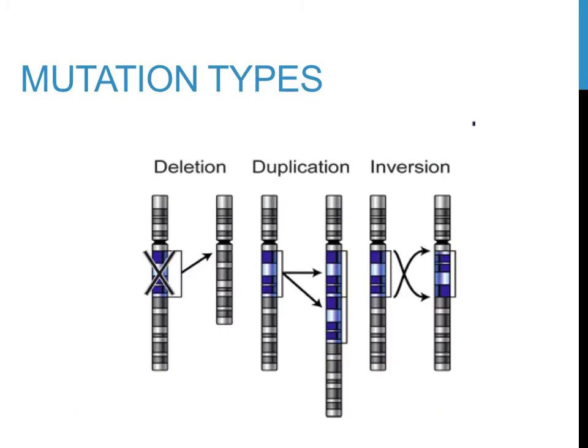The previous slide showed the different types of mutations using letters. This slide shows what these can look like on chromosomes themselves, and might be helpful to gain a better understanding of what occurs in these different types of mutations.